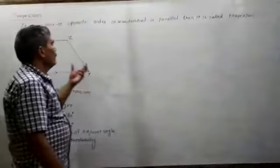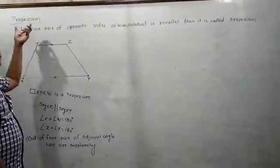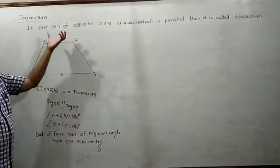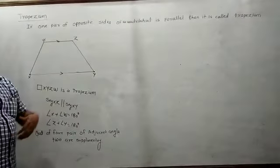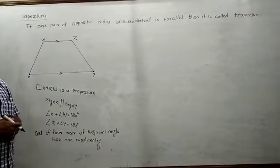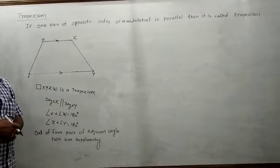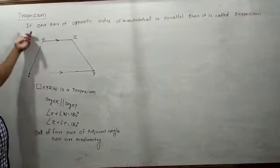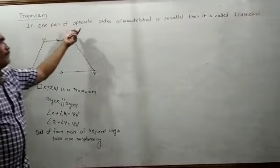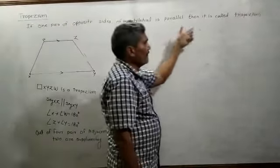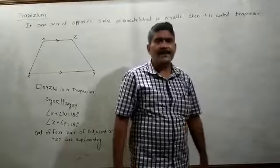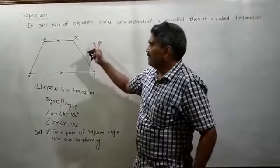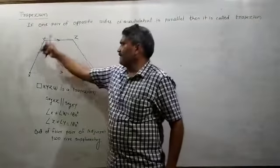Let's start with a new quadrilateral: the trapezium. Today we will look at the definition of a trapezium and some of its properties. If one pair of opposite sides of a quadrilateral are parallel, then the quadrilateral is called a trapezium. This is the quadrilateral trapezium.